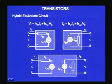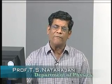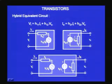Now we can try to model our transistor using these hybrid parameters. Our transistor has three terminals, but for a two-port network we need four terminals. We have already discussed that one terminal can be common between input and output. Correspondingly, we get three different configurations: common base, common emitter, or common collector. So transistors can be configured in three different ways.